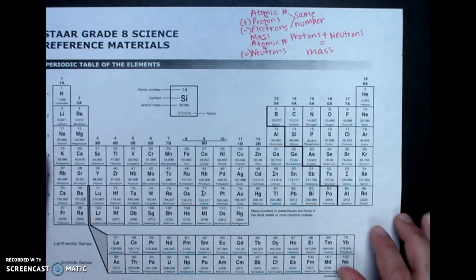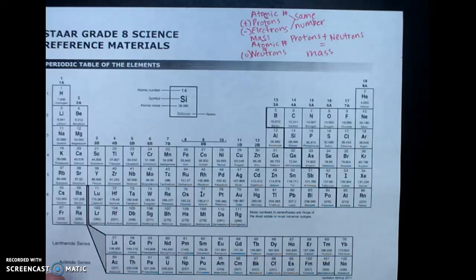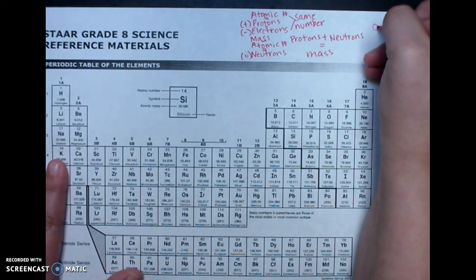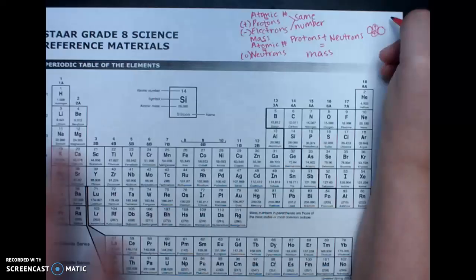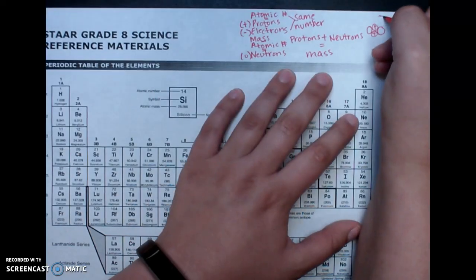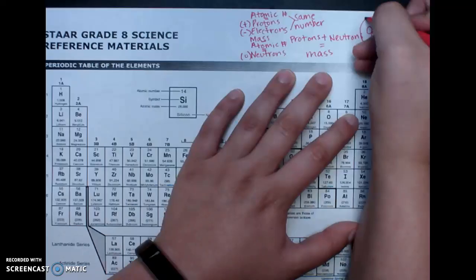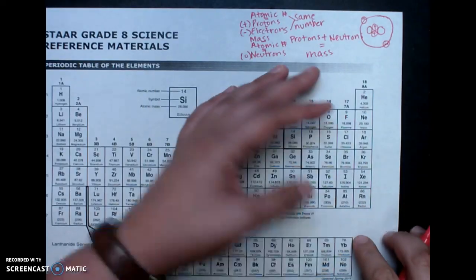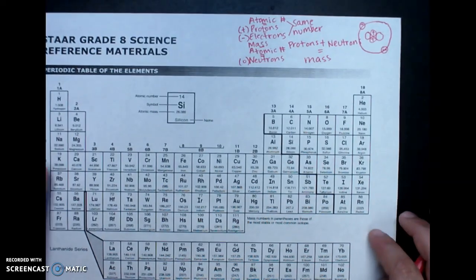We also need to remember the structure of an atom. Okay, so first we have our protons, they go in the center. And we also have neutrons. And then we have the electrons going around the outside. And they have a negative charge. Okay, so there's our basic structure of an atom.